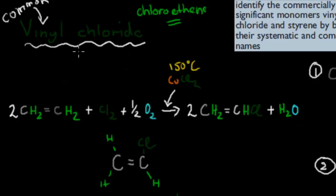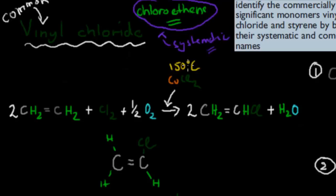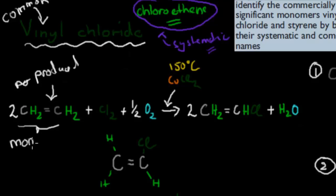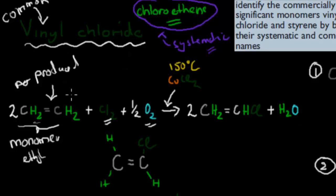You have to remember that name — chloroethene — that's its systematic name. But I'll show you how you can make it easier to remember by attaching it to logic. So this is how vinyl chloride is actually produced. We have an ethylene monomer attaching to chlorine gas and half a mole of oxygen gas, and we also need a catalyst: 150 degrees Celsius and a copper dichloride catalyst, which speeds up the reaction.